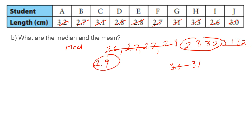And the mean is we're going to add all those up, and I'm just going to do this on a calculator. 3.2 plus 2.7 plus 3.1, 2.8 plus 2.8 plus 2.7 plus 31 plus 3.3 plus 2.6 plus 3.0. So, the mean is 57.2 divided by 10 equals 5.72 per person.